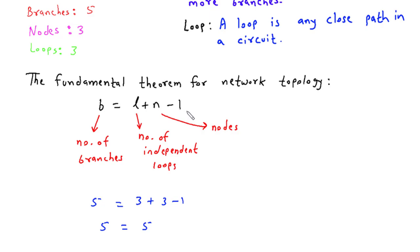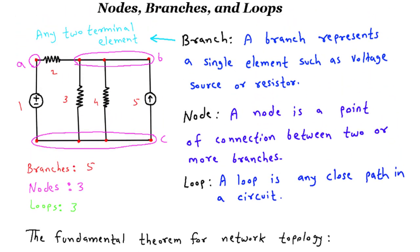So there you have it. Nodes, branches, and loops are the fundamental components of an electrical circuit. Nodes represent the connection points, branches are the paths connecting the nodes, and loops are the closed paths that allow current to flow.